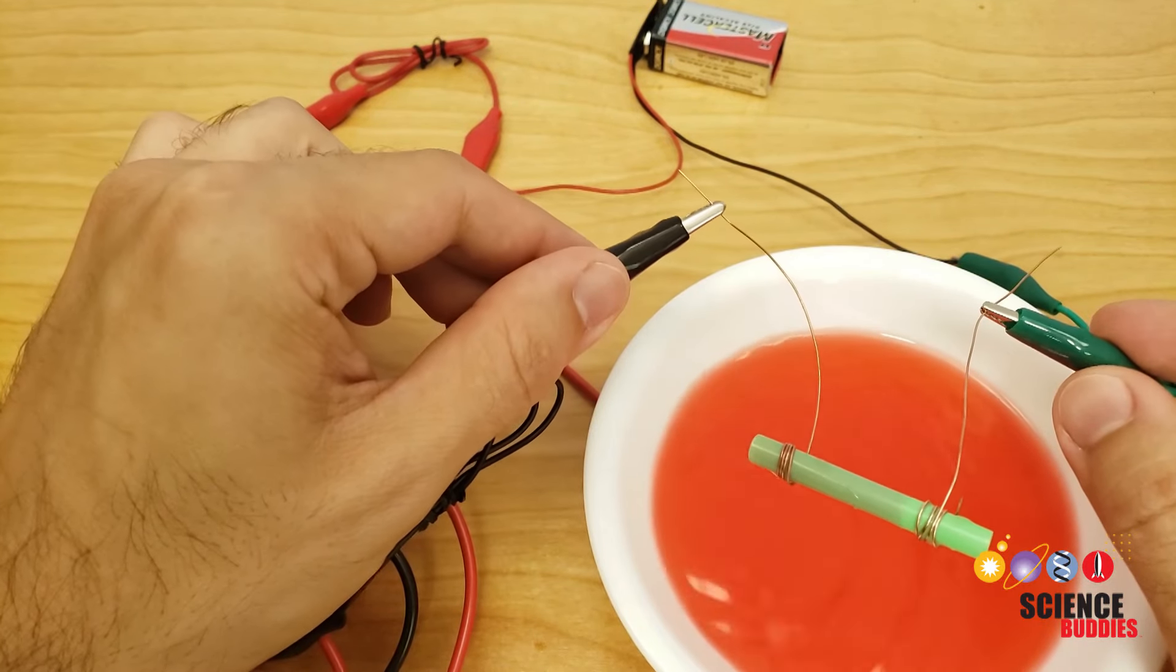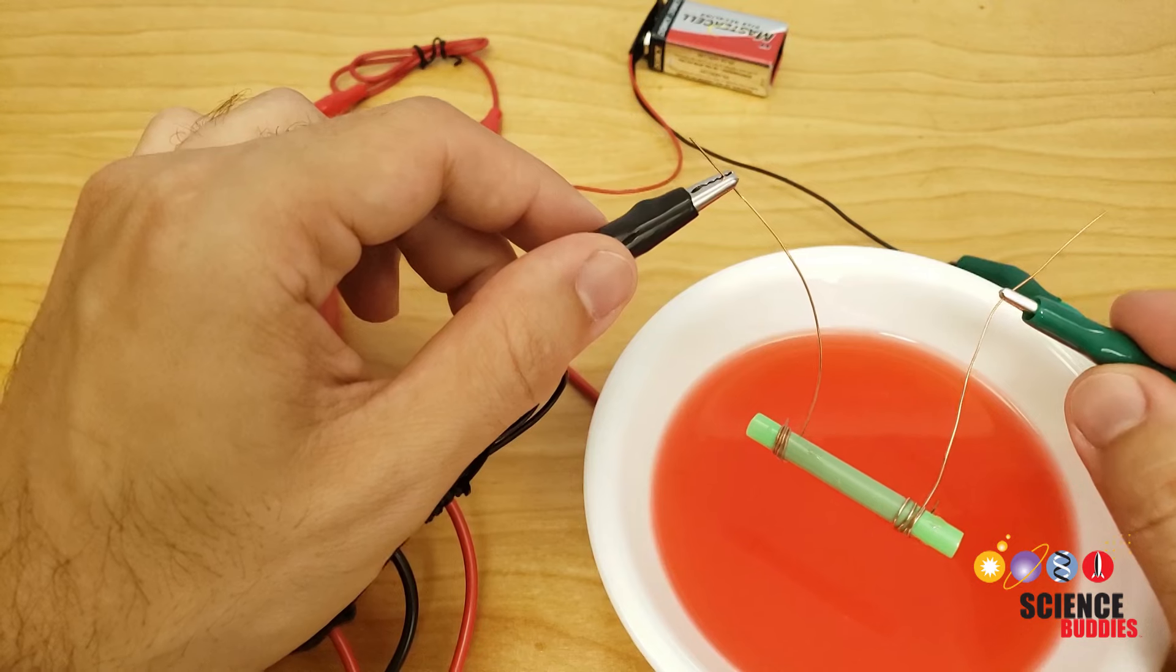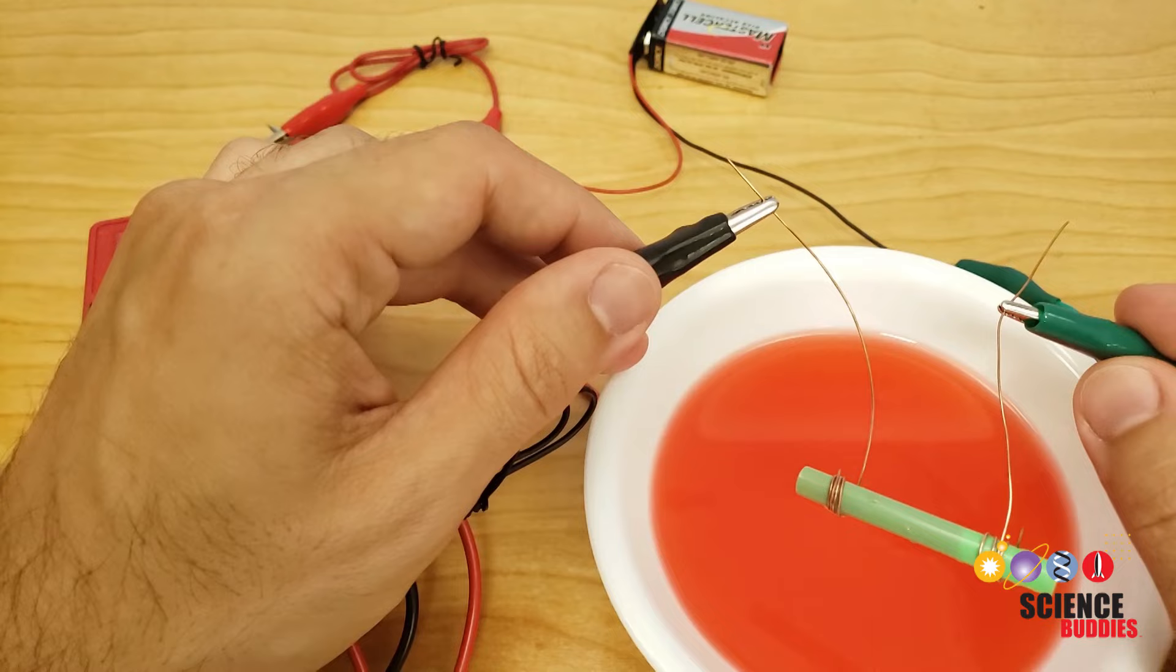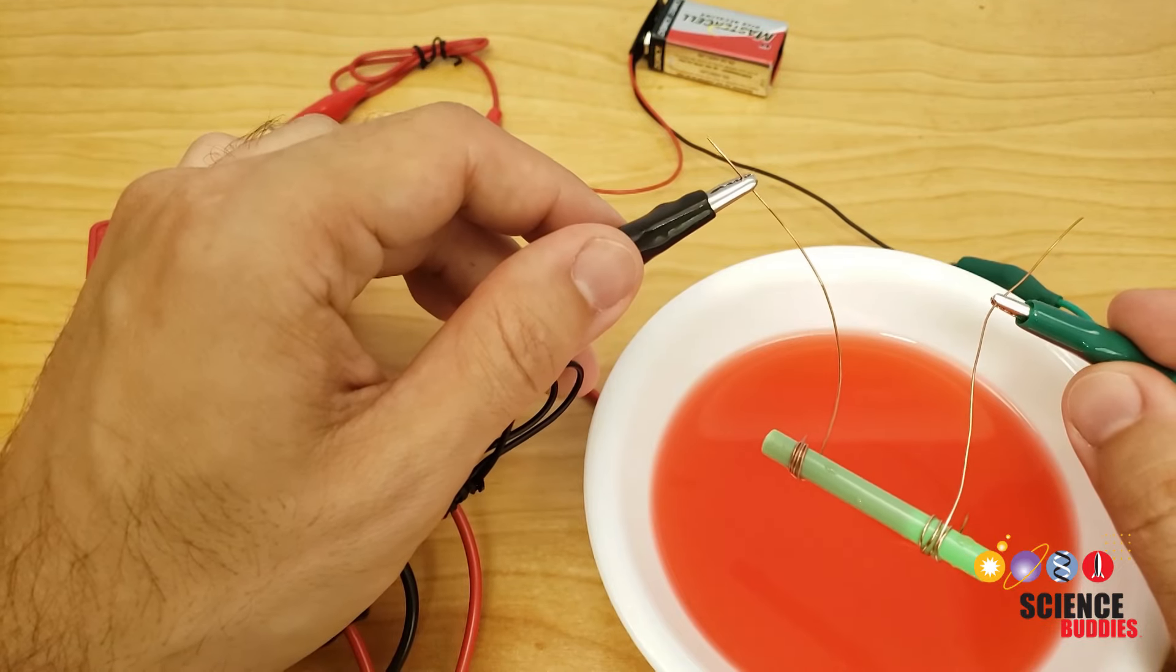In between trials with different liquids, you will also want to completely rinse off your sensor with distilled water and then dry it so you don't have any residual contamination from different liquids between trials.